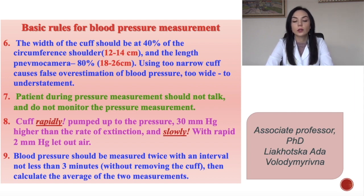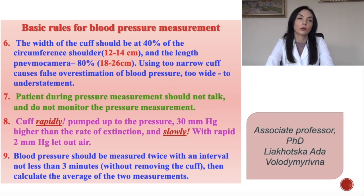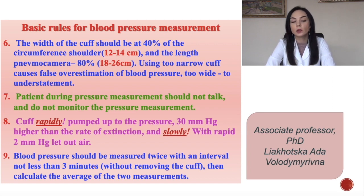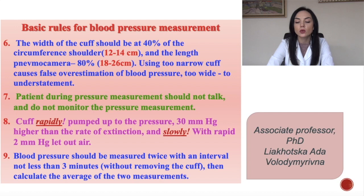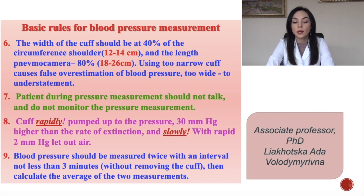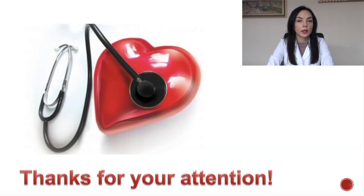You should have two cuffs — one standard and one wide. During pressure measurement the patient should not talk or monitor the measurement. Rapidly pump up the cuff to 30 mmHg higher than the expected rate, then slowly let out at 2 mmHg per second. Blood pressure should be measured twice with an interval of not less than three minutes without removing the cuff, then calculate the average of the two measurements. Also ask about coffee and nicotine — if the patient smoked or drank coffee within 30 minutes before measurement. Thanks for your attention, have a good day.